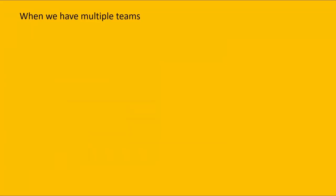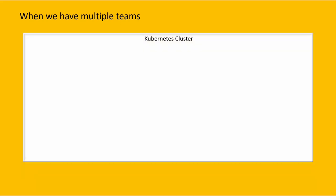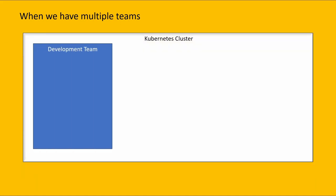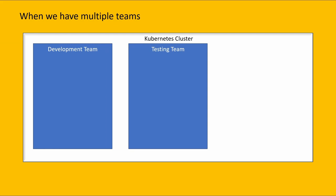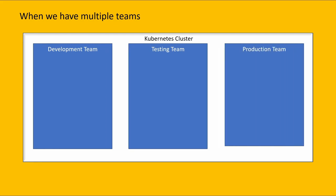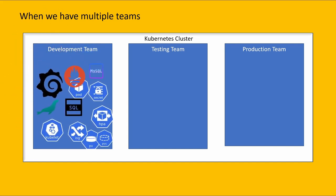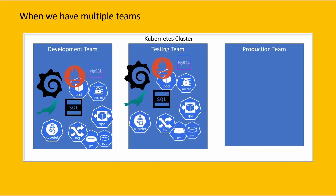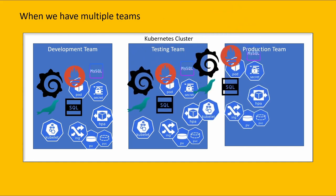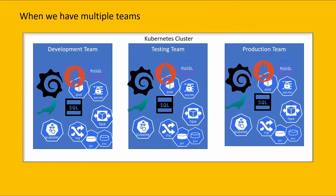The second use case is when we have multiple teams. Suppose we have one cluster shared by a development team, a testing team, and a production team. The development team creates their own objects, the testing team creates their own objects, and the production team runs applications in the live environment. With the help of namespaces, we can virtually separate the cluster.